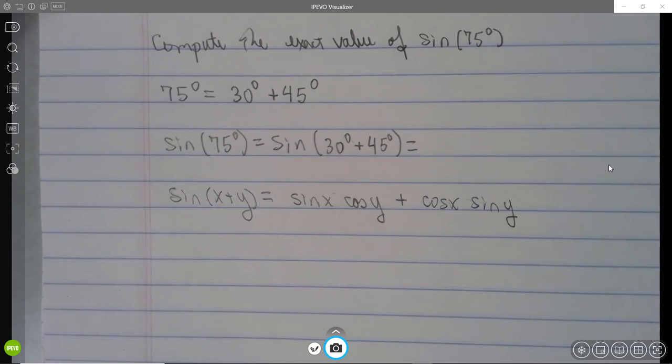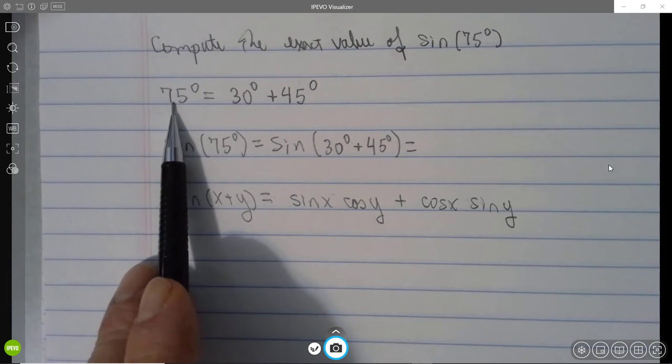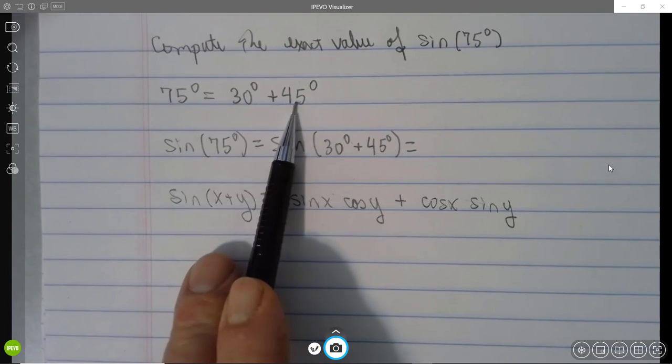Okay, the next problem we want to solve is to compute the exact value of the sine of 75 degrees. Now, the thing to recognize here is that 75 is equal to 30 plus 45.